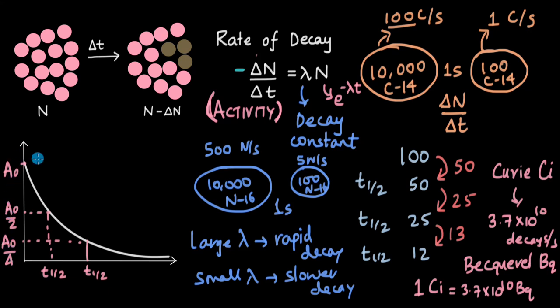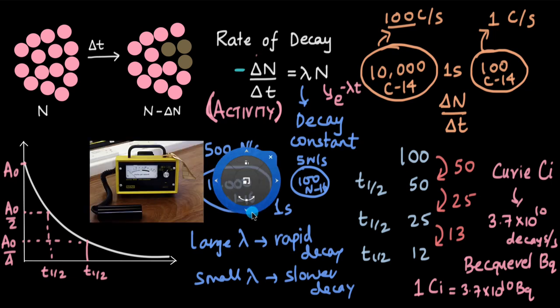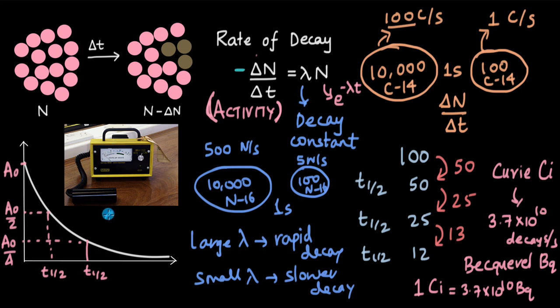This can be verified experimentally. The instrument used to count radioactive decays per second — to measure the activity of a radioactive sample — is called a Geiger-Müller counter. This instrument measures activity, which is why knowing the activity of a sample is important. As soon as it detects one radioactive decay, there is a clicking or crackling sound, allowing one to count the decays.